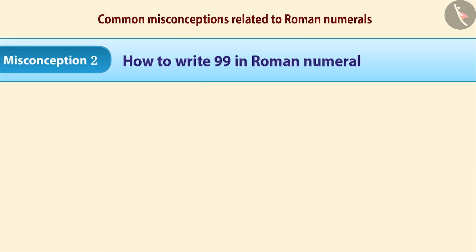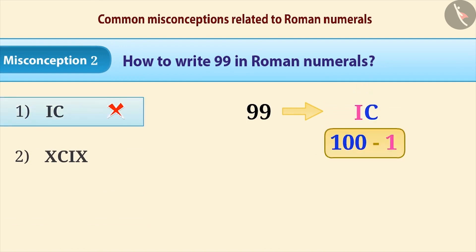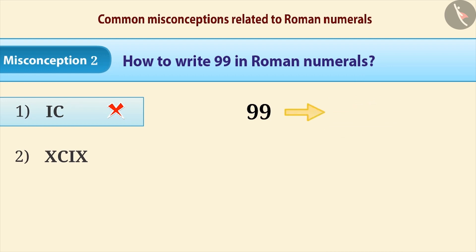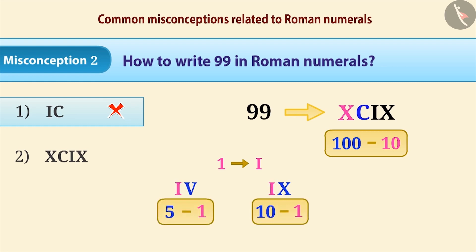Misconception 2: How to write 99 in Roman numerals? Considering 99 equals 100 minus 1, it is sometimes expressed incorrectly as IC in the Roman system. The correct understanding is that small symbols written to the left of a larger symbol express subtraction, but a symbol of smaller value such as 1 can only be subtracted from the two symbols larger to it — that is 5 and 10 — and cannot be subtracted from symbols much larger to it such as 50, 100 or 500. With this understanding, the correct answer is option 2.